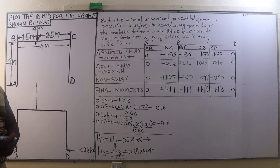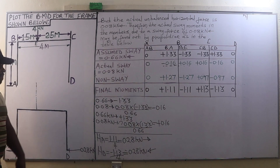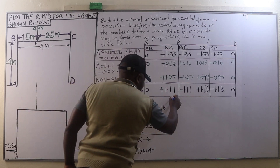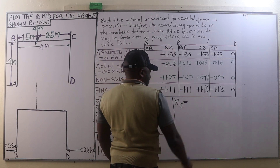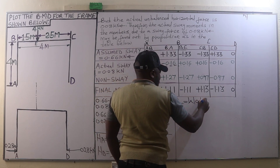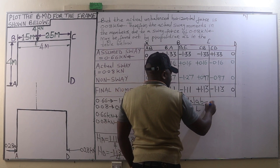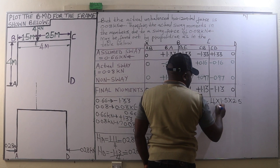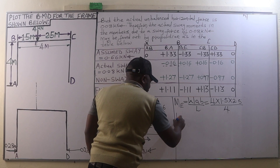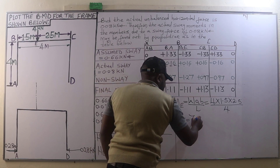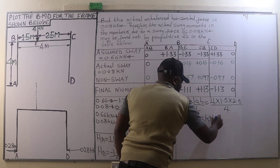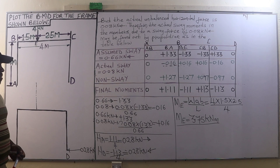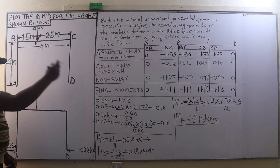We now calculate the bending moment at E on span BC before plotting the bending moment diagram. The bending moment at E is given by W·A·B / L, where W is the point load of 4 kN, A is 1.5 meters, B is 2.5 meters, divided by the span BC of 4 meters. This gives a moment of 3.75 kNm.